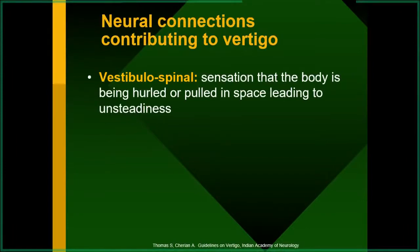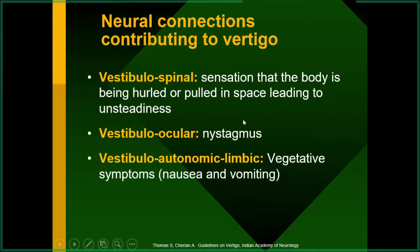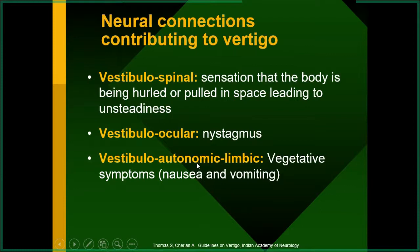The neural connections contributing to vertigo include the vestibulospinal tract, giving the sensation that the body is being pulled in space, leading to unsteadiness; the vestibulo-ocular reflex, which generates nystagmus; and the vestibulo-autonomic connections, which are part of the limbic system and cause vegetative symptoms such as nausea, vomiting, perspiration, and tachycardia. There is also a connection between the vestibular nuclei and the reticular system.